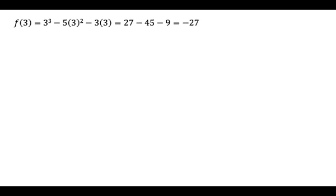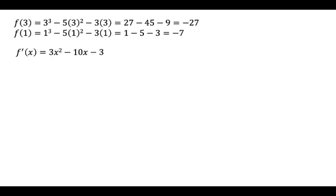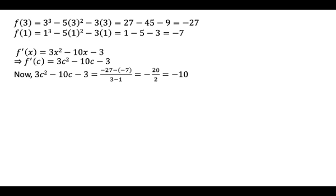Now calculate: f(3) = −27, f(1) = −7. And f'(x) = 3x² − 10x − 3, so f'(c) = 3c² − 10c − 3. Putting all the values into the result: f'(c) = [f(3) − f(1)] / (3 − 1) = (−27 + 7) / 2 = −10.